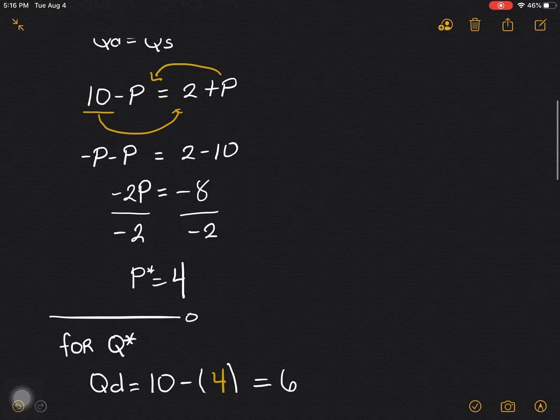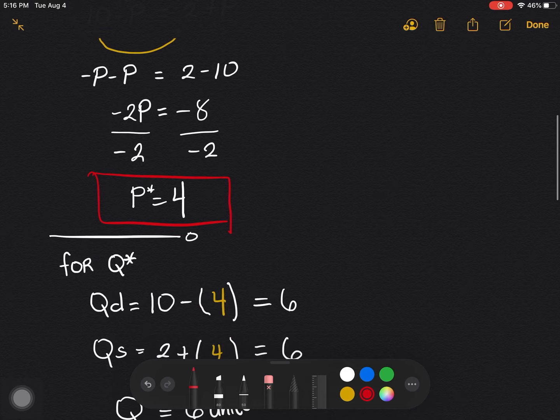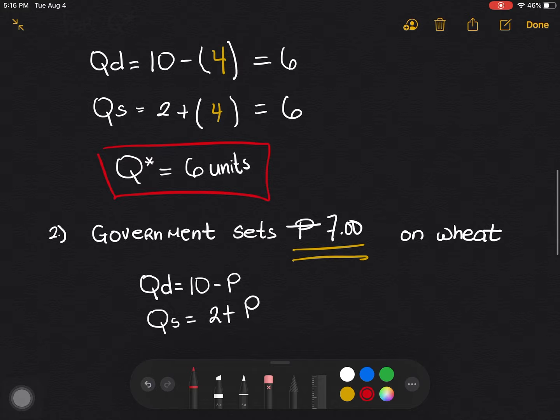So as we solved it, we know that the price equilibrium, or the price star is 4 pesos, and the quantity star is 6 units. So we have that already in mind.